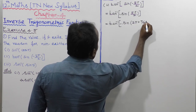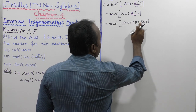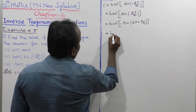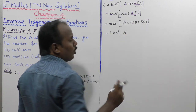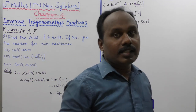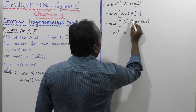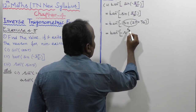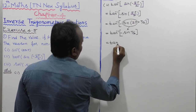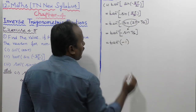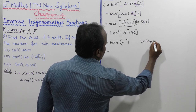5 pi by 2 can be written as 2 pi plus pi by 2. So this equals tan inverse of minus sin of 2 pi plus pi by 2. Since 360 degrees plus means first quadrant, all terms are positive, so sin of 2 pi plus pi by 2 is equal to sin of pi by 2, which equals 1. Therefore this becomes tan inverse of minus 1.